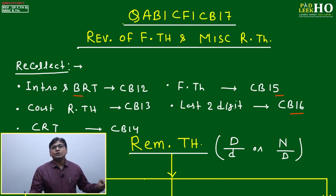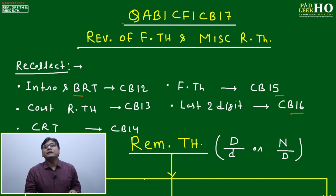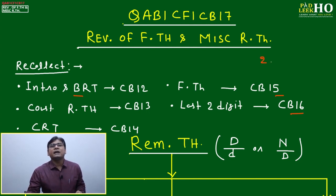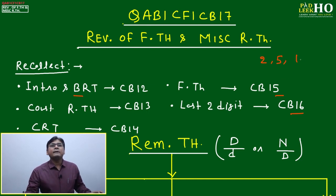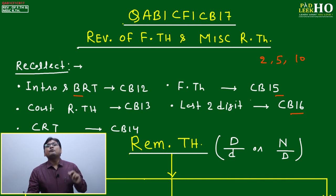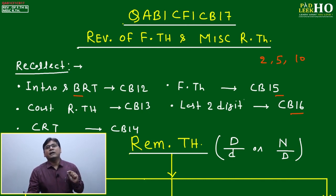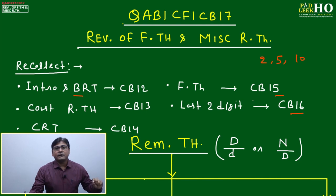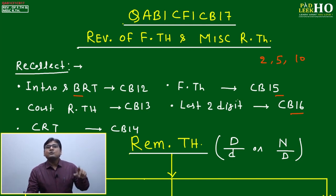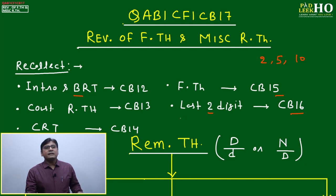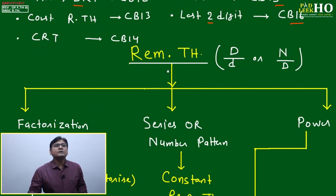The last digit and unit digit material from the power cycle sessions is sufficient for questions asking only about unit digits. For example, finding the remainder when dividing by 2, 5, or 10 uses unit digit techniques. For last two digits, we square these and apply the two-digit method.